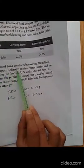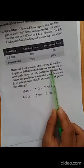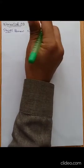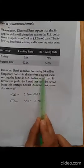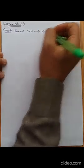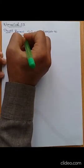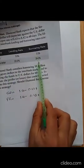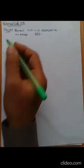Applying the borrowing rule, in step one we will borrow money in Singapore dollars. The numerical also instructs: Diamond Bank considers borrowing 10 million Singapore dollars in the interbank market. So we borrow 10 million Singapore dollars. The present value is 10 million SGD, the life of the borrowing is 60 days, and the borrowing interest rate for Singapore dollars is 24%.